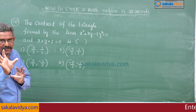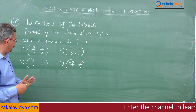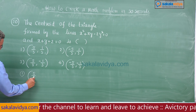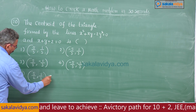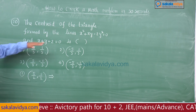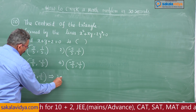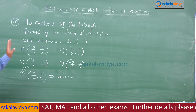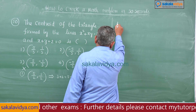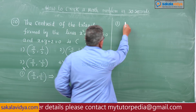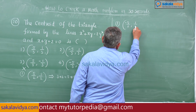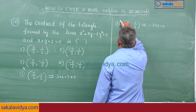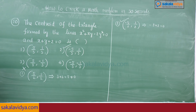First choose an option and multiply each coordinate by 3/2. Take the first option (5/3, 1/3): multiplying by 3/2 gives (5/2, 1/2). Substitute into the line x + y + 2 = 0: 5/2 + 1/2 + 2 = 5 ≠ 0, so the first option is eliminated. For the second option (−5/3, 1/3): multiplying by 3/2 gives (−5/2, 1/2). Substituting: −5/2 + 1/2 + 2 = 0. Yes, the second option is the right answer.